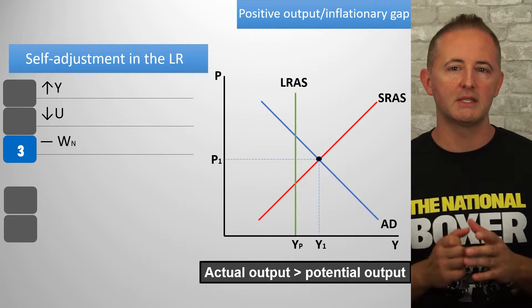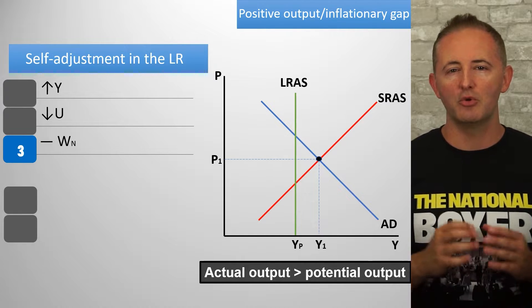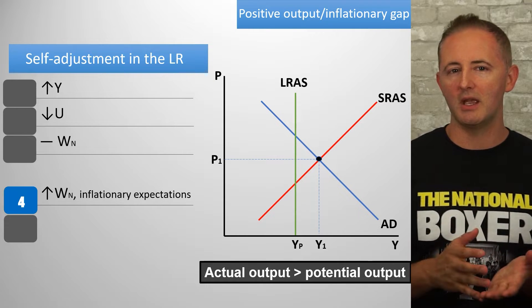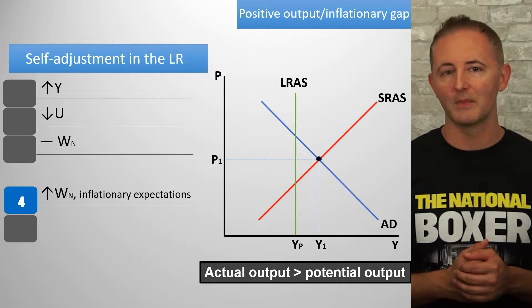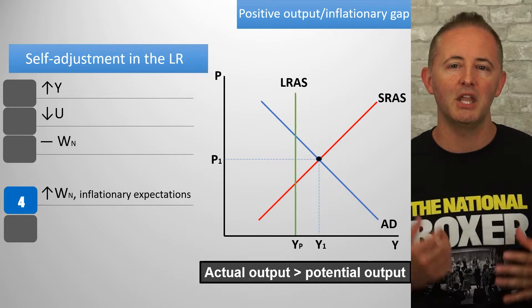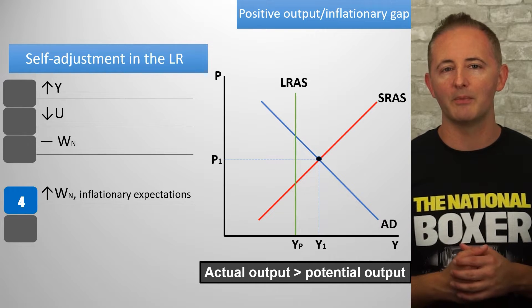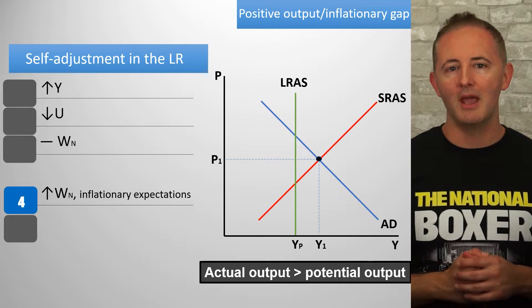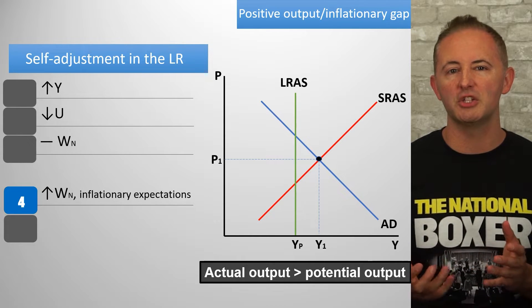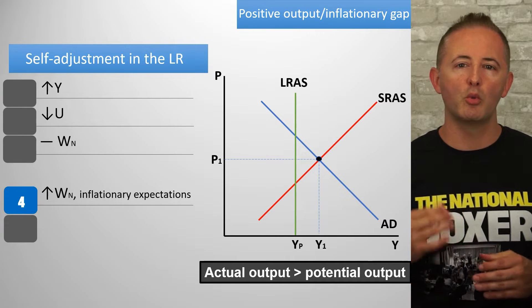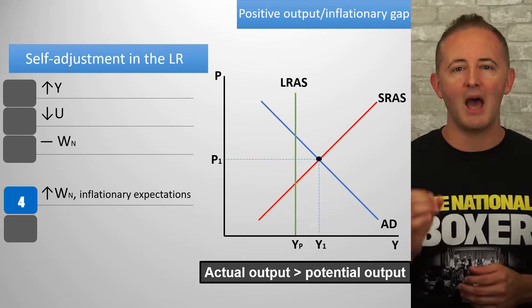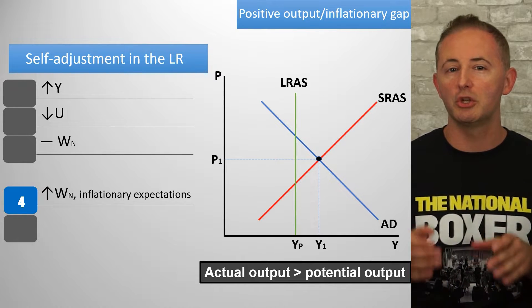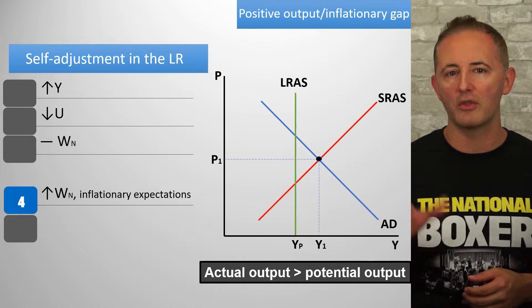In the long run, all prices and wages become fully flexible. So because there's been a decrease in unemployment, nominal wages will rise in the long run. Why are firms willing to pay higher wages? Because of falling unemployment, there is increasing competition for workers, which drives wages up. There's also a change in inflationary expectations — this is an inflationary gap with an increase in the price level, and our expectations about inflation are largely based on current or very recent inflation. When workers notice the increase in the price level, they demand higher nominal wages — not as a raise, but an increase in nominal wages trying to recapture the original purchasing power their nominal wage provided before the price level increase.